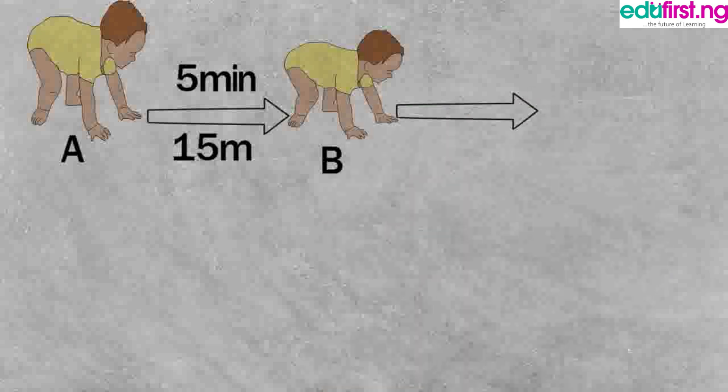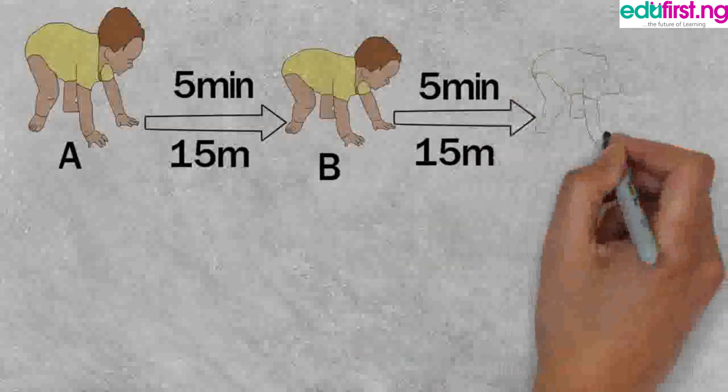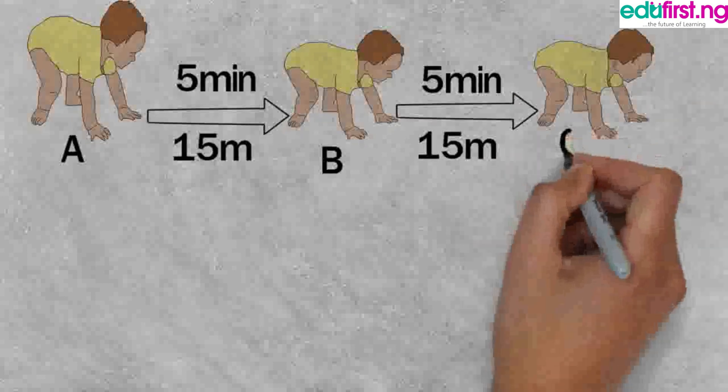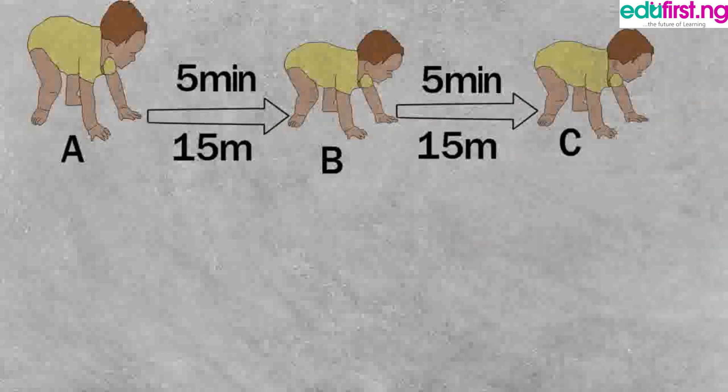The baby then made further movement 15 meters away from its previous point to another point known as point C in 5 minutes. This movement is called displacement.